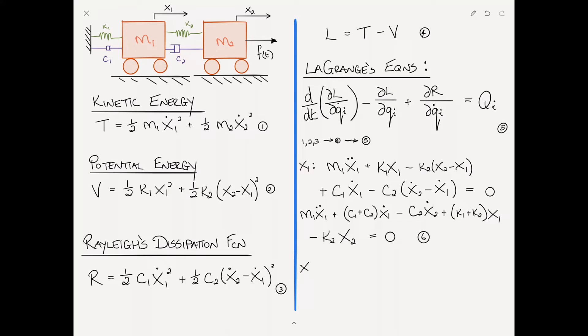For the second equation in the x2 coordinate, proceed the same way, taking derivatives with respect to x2. This gives m2 x2 double dot. From potential energy we get plus k2 times x2 minus x1, and from Rayleigh's function plus c2 times x2 dot minus x1 dot.